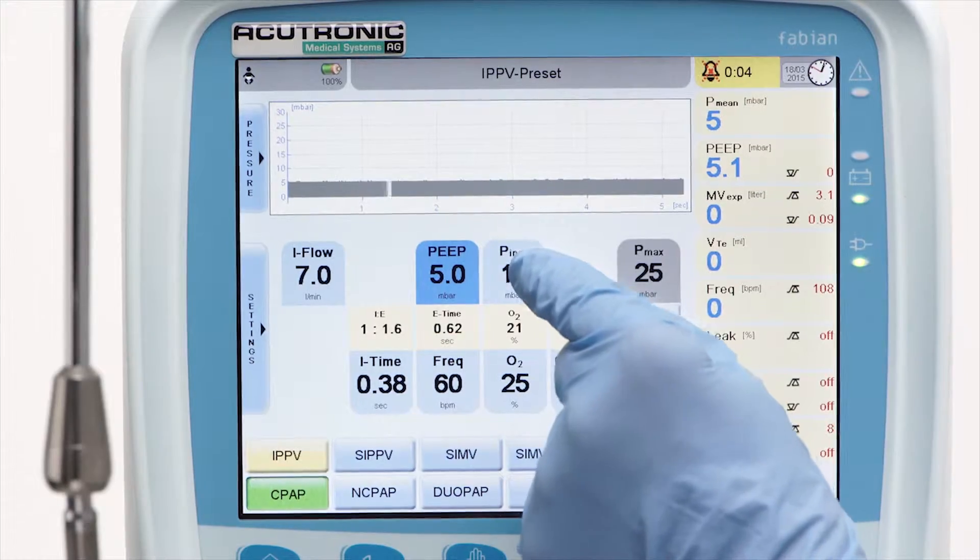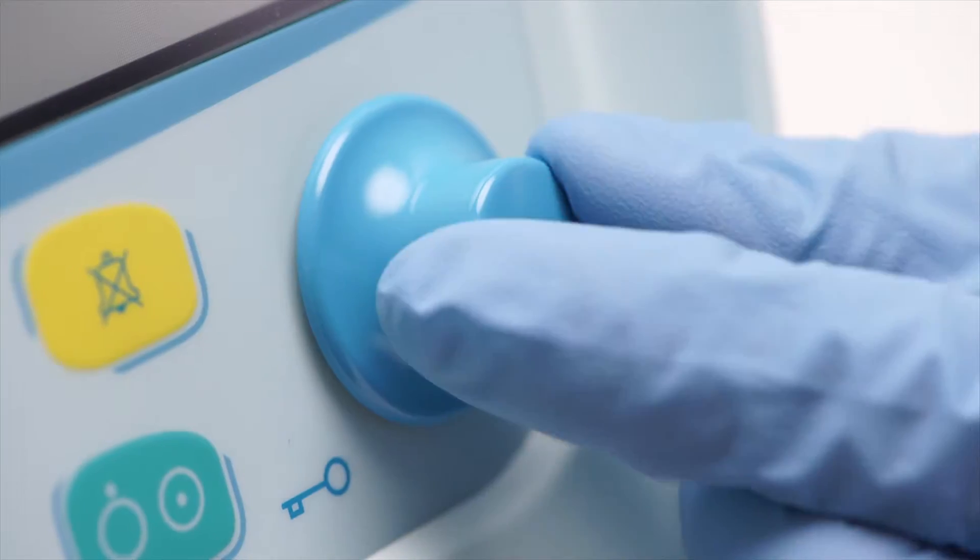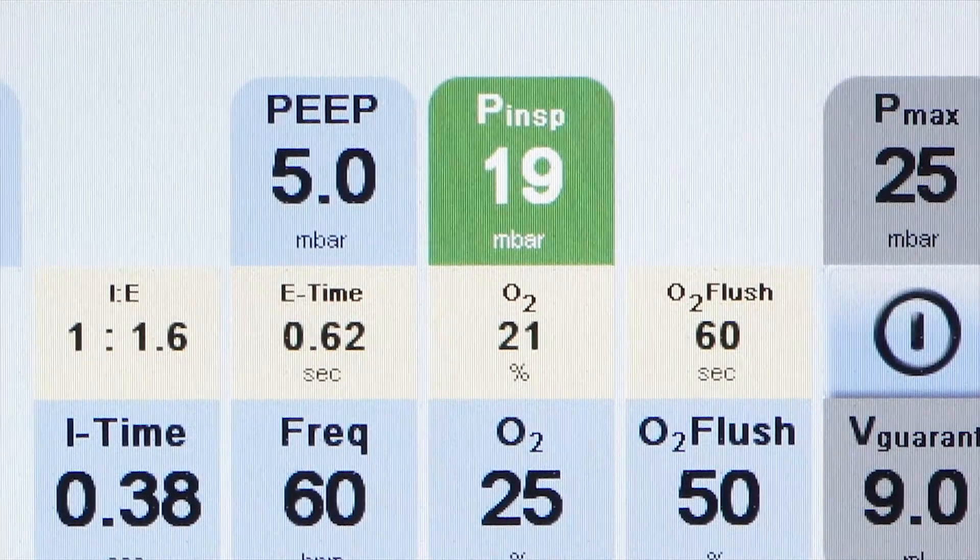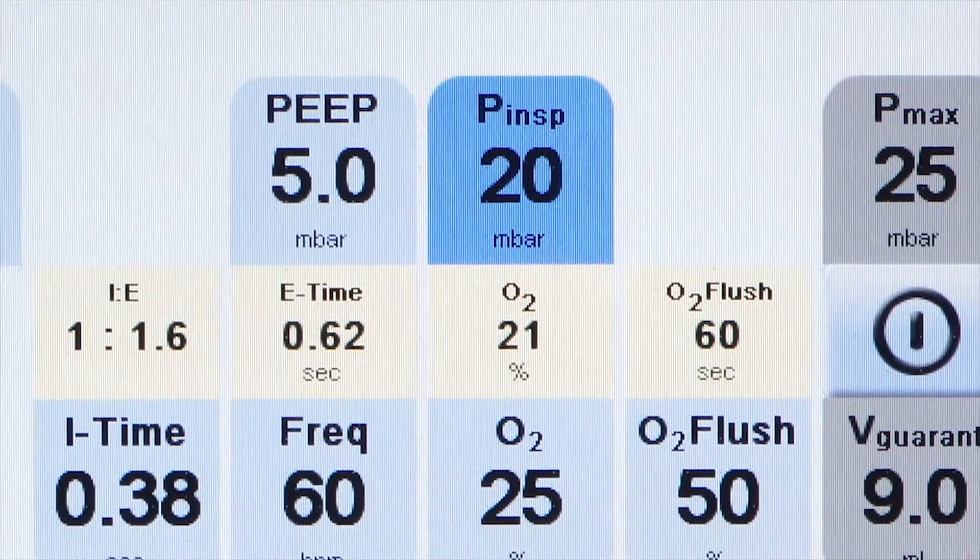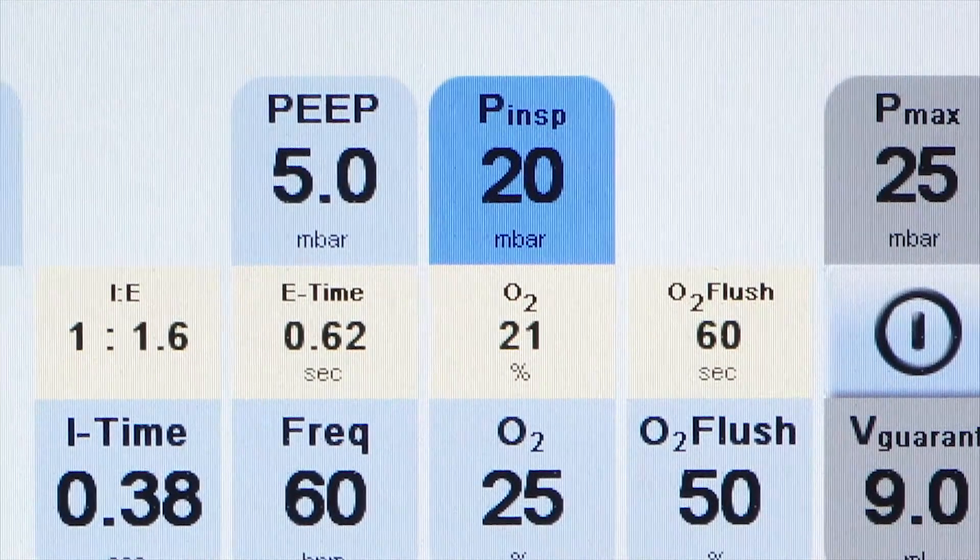P-INSP. 16 to 18 centimeters of water, depending on clinical protocol. This pressure controls the tidal volume. It should be set to 4 to 6 milliliters per kilogram of body weight.